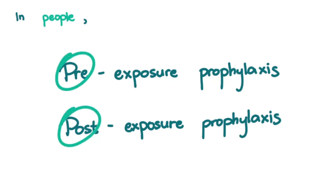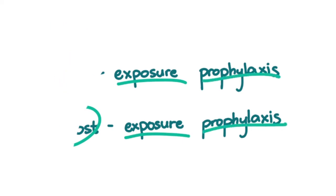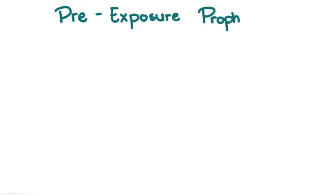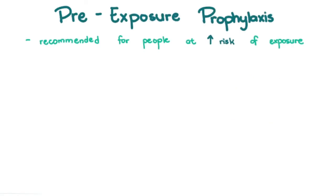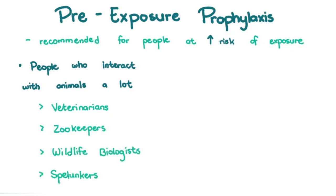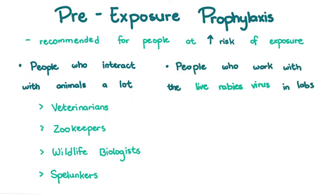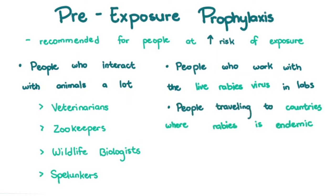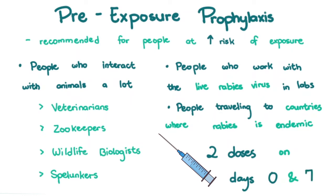Pre meaning before, post meaning after, exposure meaning point of contact with the virus, and prophylaxis meaning steps taken to prevent the disease. Pre-exposure prophylaxis is recommended for people at high risk of exposure to rabies — including veterinarians, zookeepers, wildlife biologists, spelunkers or cave explorers due to the risk of bat exposure, people who work with live rabies virus in labs, and people traveling to countries where rabies is endemic. Two doses of the vaccine are administered one week apart for pre-exposure prophylaxis.